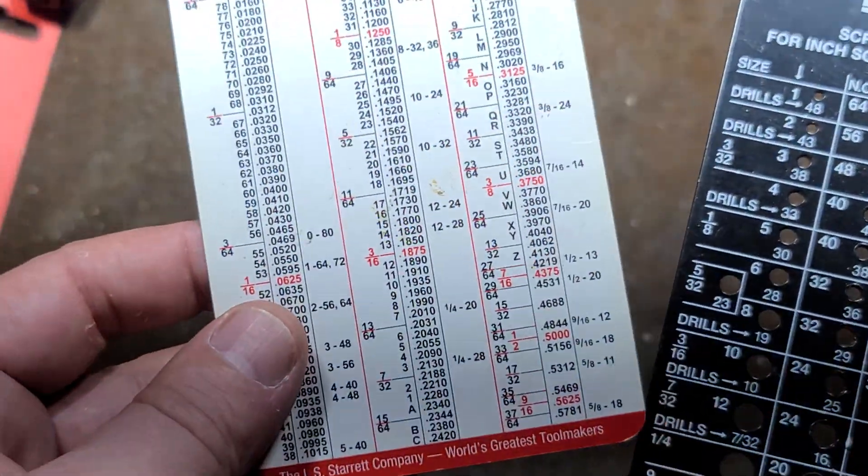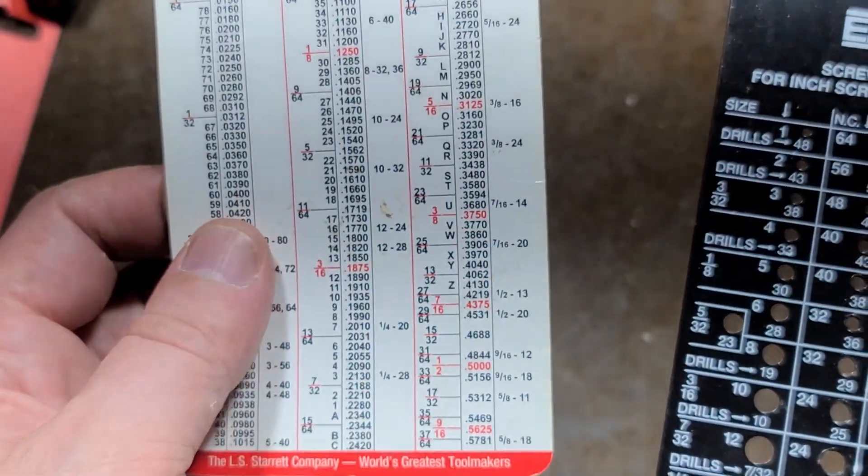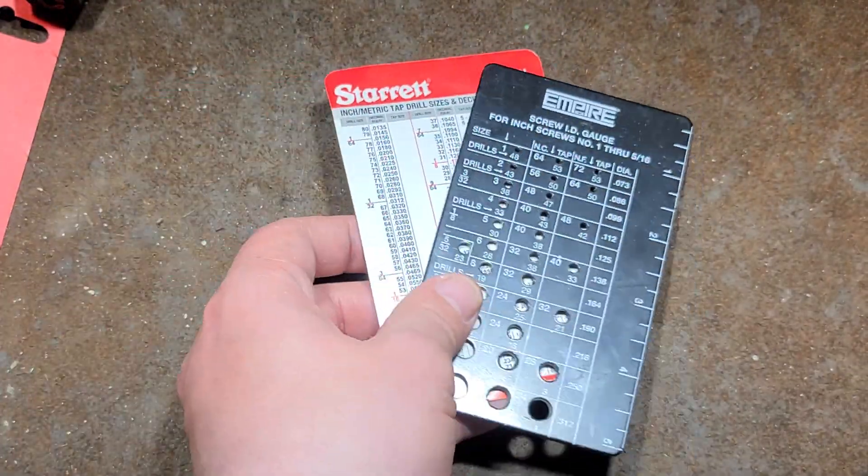These are handy if you get one of these like a little drill slide, drill and tap cheat sheets. These kind of go hand in hand with a little Empire thread gauge.